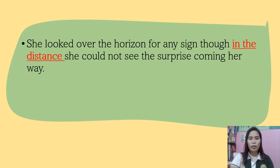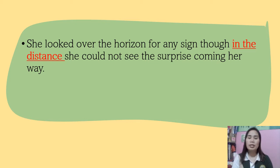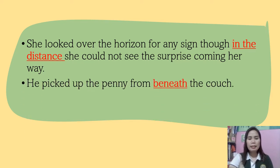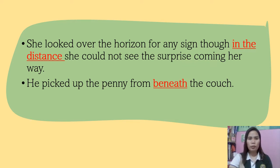'She looked over the horizon for any sign; though in the distance she could not see the surprise coming her way' — 'in the distance' is the example here. Next: 'He picked up the penny from beneath the couch' — 'beneath' is an example of a transition that shows location.